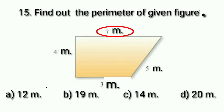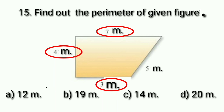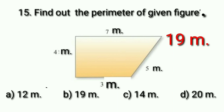Let's start adding the side lengths: 7 meters and 4 meters gives 11 meters. 11 and 3 gives 14 meters. 14 and 5 gives 19 meters. So the perimeter of this given figure is 19 meters.